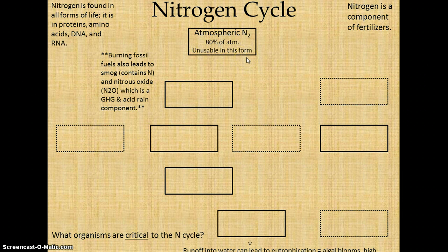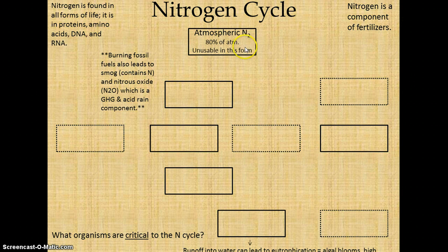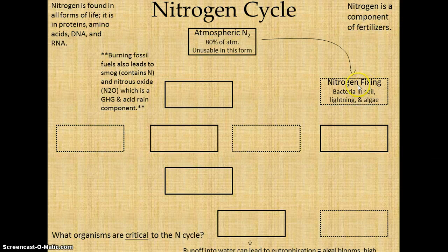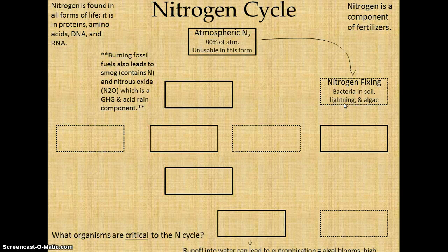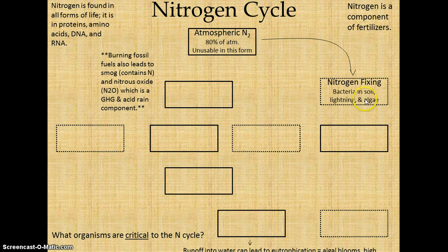We're going to start in the atmosphere just like we did with the carbon cycle. We have atmospheric N2 — two nitrogen atoms bound together in gas form, pretty strong. The only thing that can rip it apart is bacteria and lightning. It is not usable; we breathe it in and breathe it right back out. So it needs to be fixed — that's actually a scientific term: nitrogen fixing. The bacteria in the soil can do it. Thank goodness, because we need nitrogen in our DNA, RNA, proteins, and amino acids. Lightning is pretty powerful — it can split the bonds and reform them. Certain types of algae in ponds can also do this.